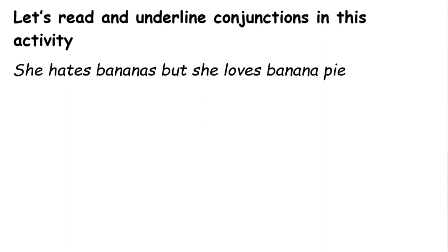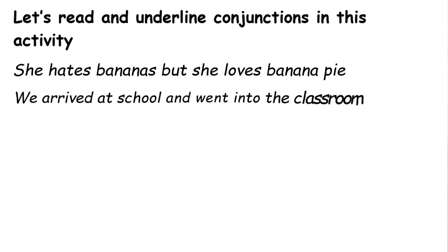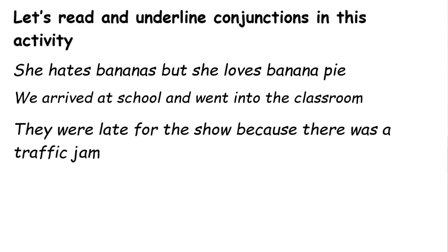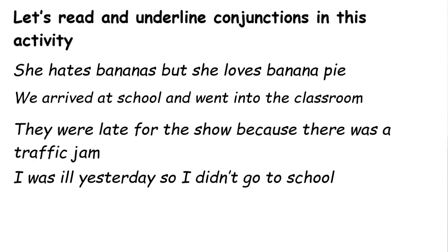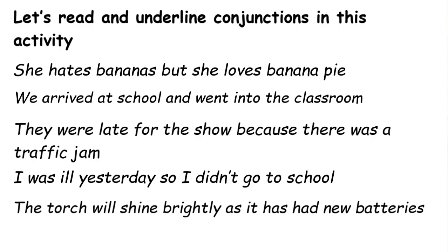Now let's do some activities to make sure you got all these. In this activity, we'll read and underline the conjunctions. For example: 'She hates bananas but she loves banana pie' — where is the conjunction? Read all the sentences and underline the conjunctions. Another sentence: 'We arrived at school and went into the classroom.' Then: 'They were late for the show because there was a traffic jam.' 'I was ill yesterday so I didn't go to school.' 'The torch will shine brightly as it has had new batteries.'